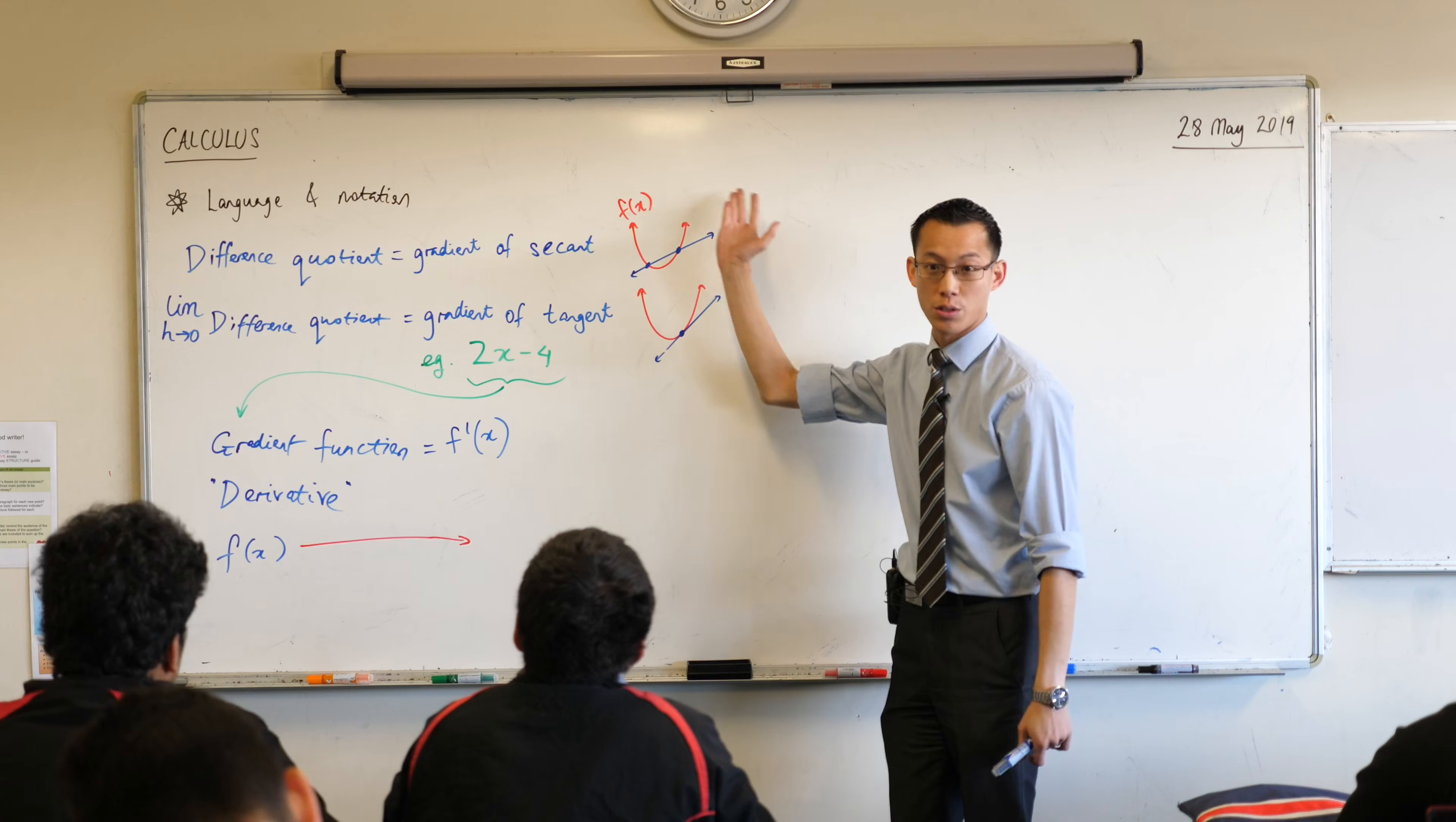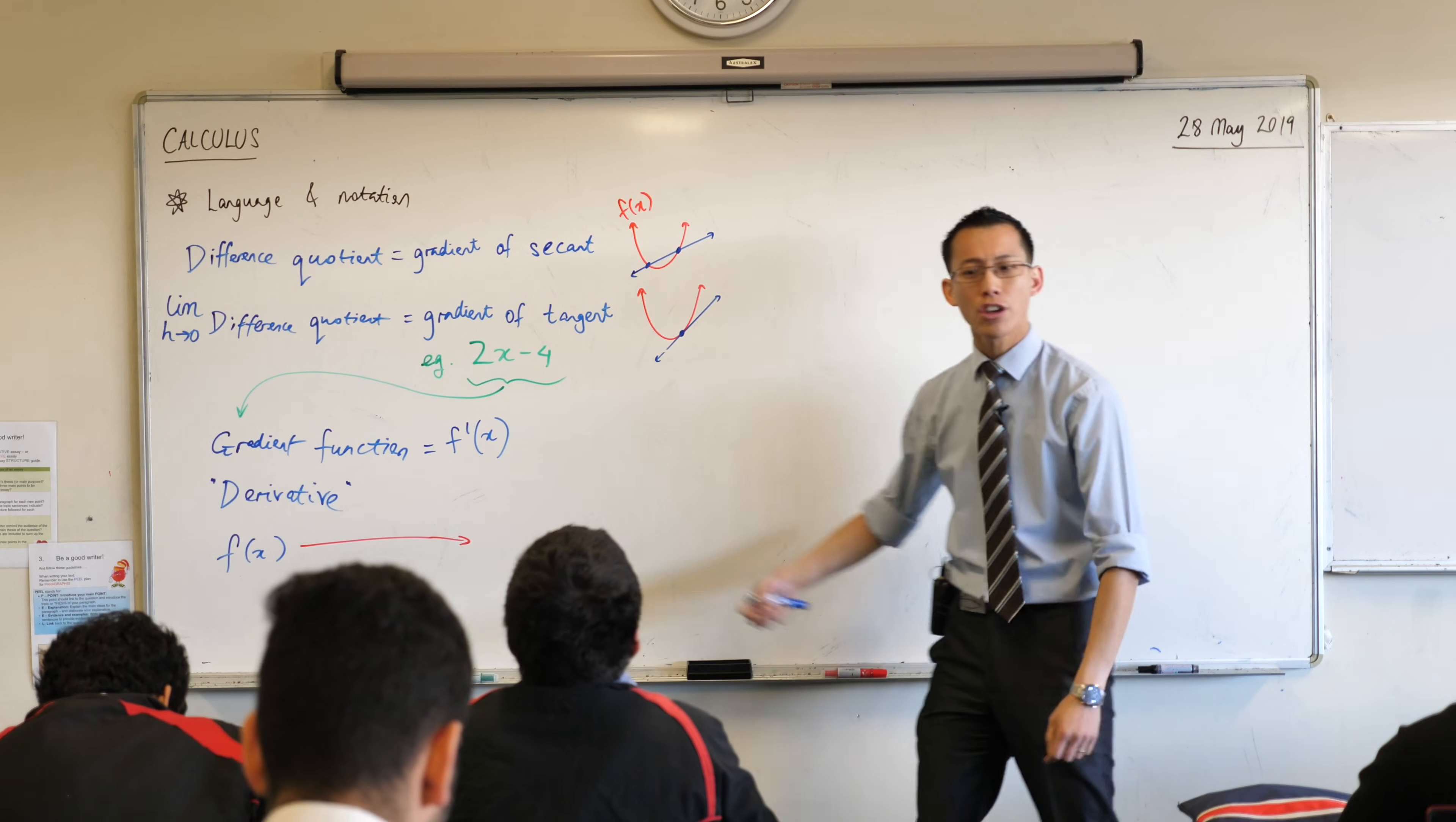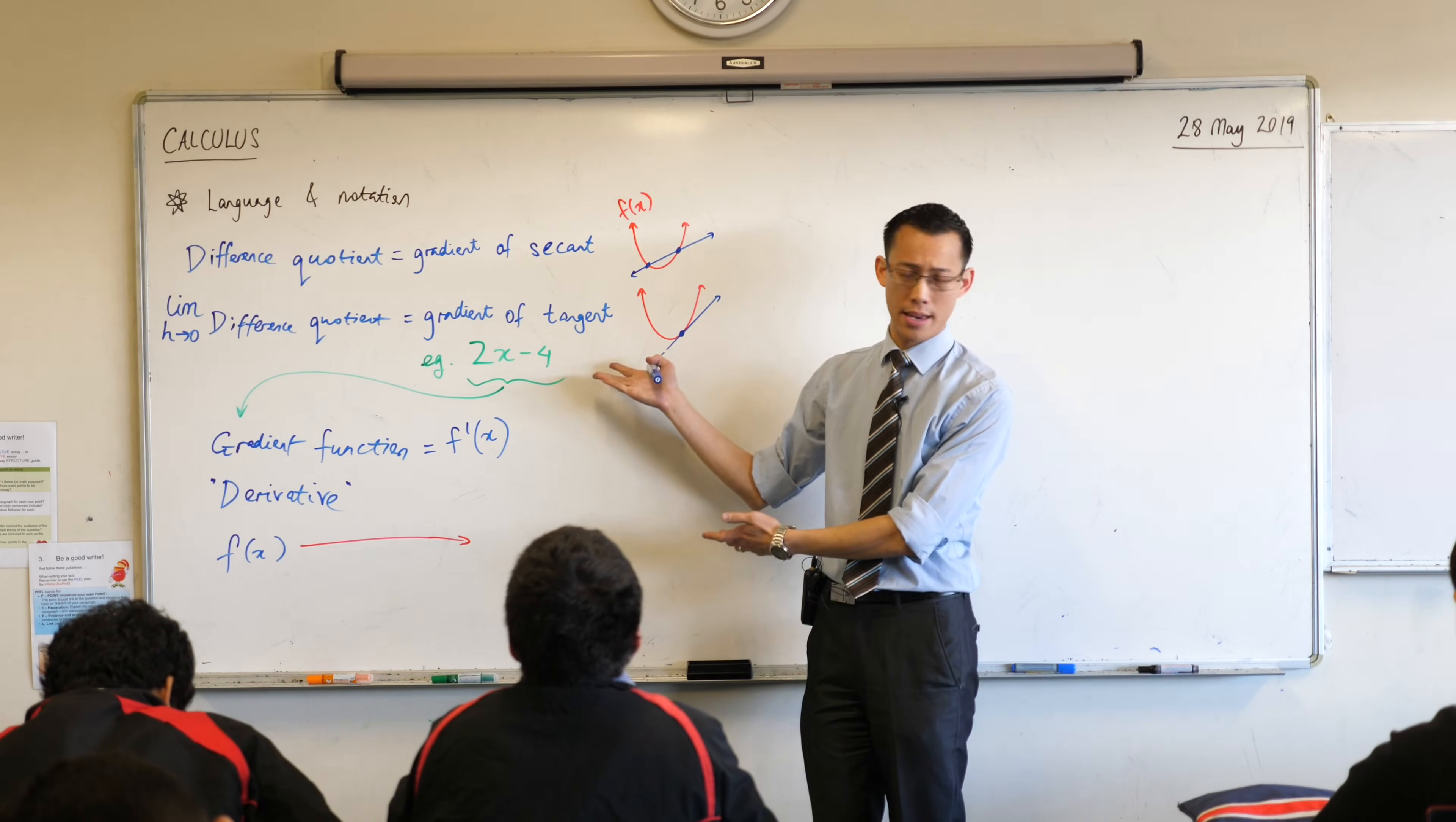So, the derivative comes from your original function, and from now on, we're going to use these phrases and words interchangeably. We might say, hey, find the gradient function. Calculate, determine what the derivative is, okay? They both mean the same thing. Find this f'(x), this 2x - 4 in this case, okay?